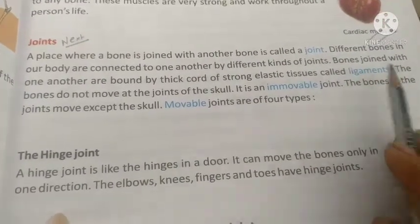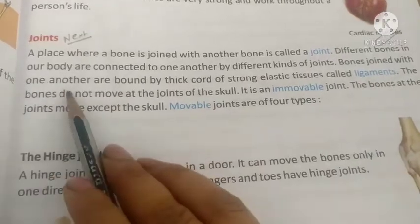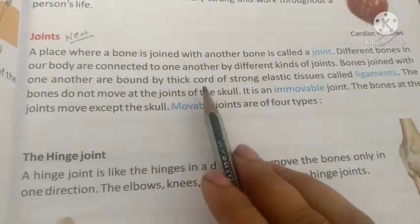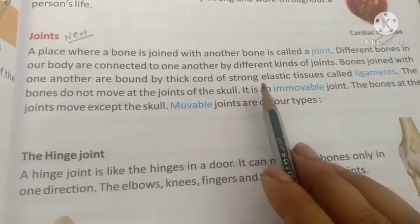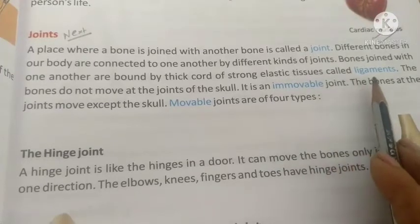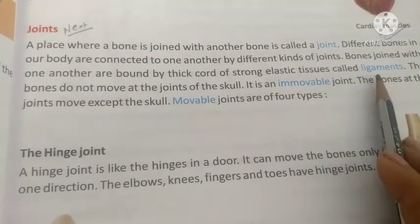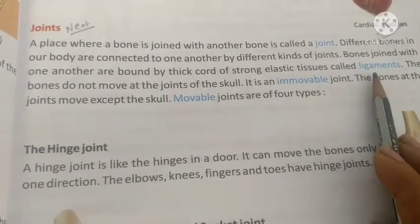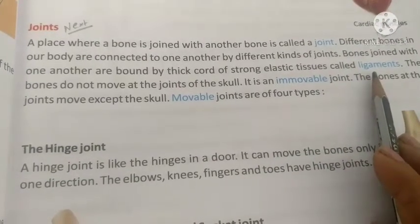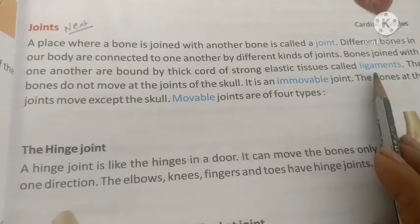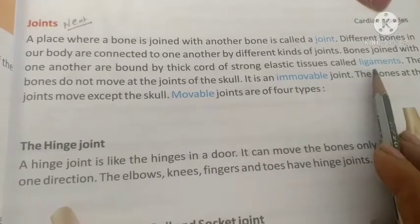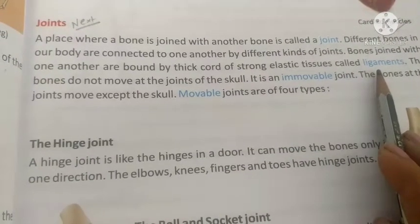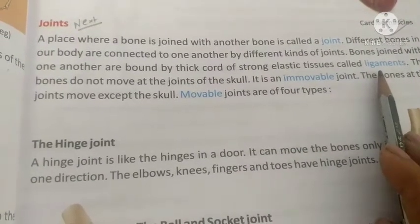Bones joined with one another are bound by a thick cord of strong elastic tissue called a ligament. Our bones are held together by this very strong elastic tissue, which we call ligament.